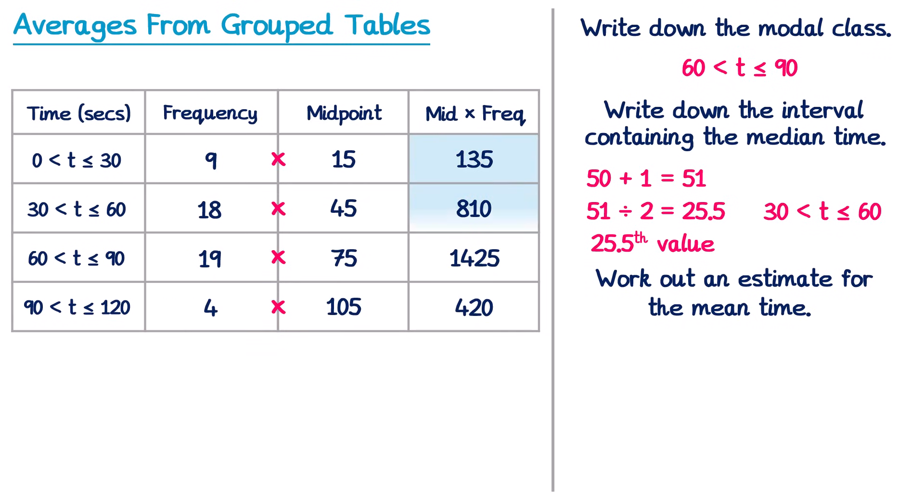Then we add up this final column here. If you add up all of those numbers you get 2790, and we divide this by the total of the frequency column. If you add up the frequency column you get 50. So to find our estimate for the mean, I do 2790 divide by 50. Using a calculator this gives 55.8. So the estimate for the mean is 55.8 seconds.